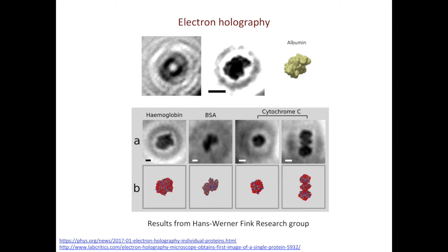More recently, electron holography has been used to resolve the structure of individual protein molecules. These examples are taken from the Fink research group from Zurich. The first image shows the raw data, and you can see the interference patterns around the molecule. The second image shows the shape of the molecule after reconstruction from the raw data, which agrees very well with the model of albumin. The same approach can be used to resolve the structures of other protein molecules.